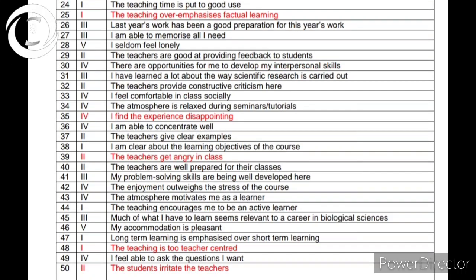Other red (negative) statements include: 'The teaching is too teacher-centered' and 'The students irritate teachers.' All statements in red are negative, so strongly agreeing with these will have a negative impact on the educational environment score. If your total score is in the region of 120 to 150, it gives a positive perception of your college's educational environment. If the score is between 50 and 100, it indicates serious problems in the educational environment which need to be addressed.